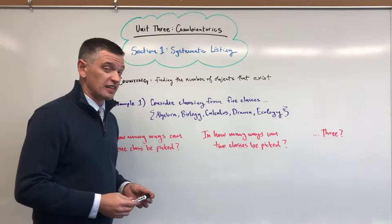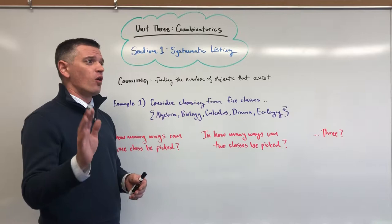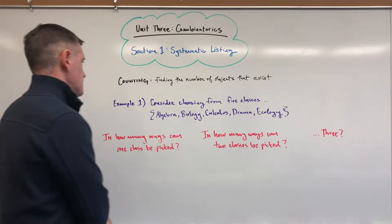Systematic listing is simply a way of listing things out systematically, meaning there's some sort of order, some sort of pattern to the way that we're counting things. We're not just randomly pulling things out of the sky. The whole point is we don't want to miss any possibilities.